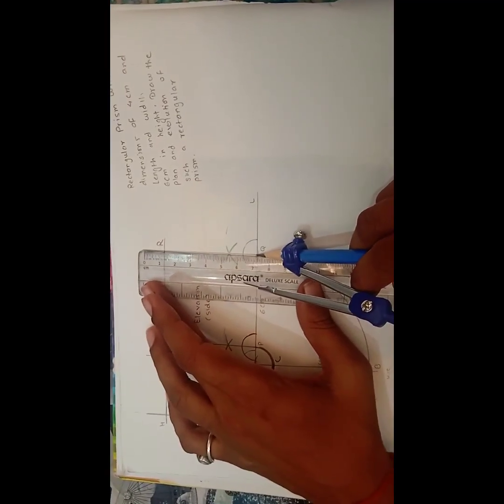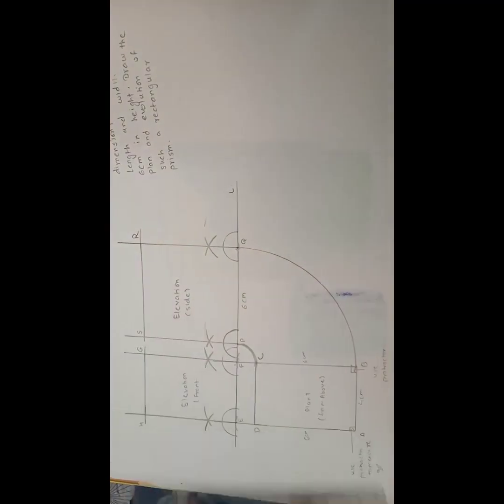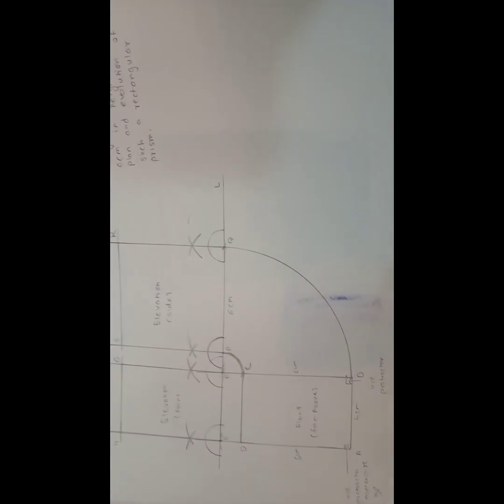And to the S, Q again draw a parallel line, perpendicular line to the Q from the here. Now what to do?